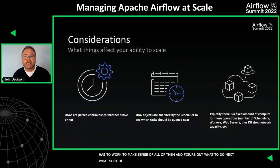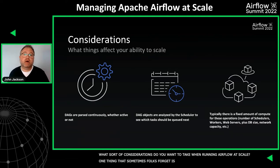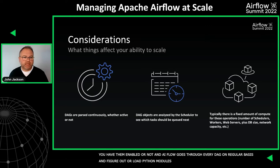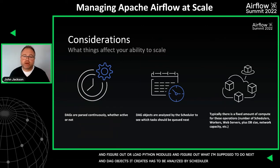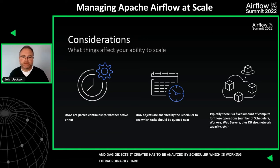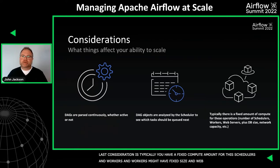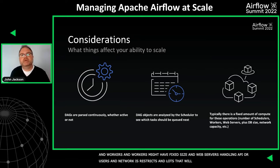What considerations do you want to take when running Airflow at scale? One thing folks sometimes forget is that Airflow is parsing DAGs constantly — whether you have them enabled or not. It goes through every single DAG on a regular basis, loads those Python modules, and figures out what it's supposed to be doing. The DAG objects it creates have to be analyzed by the scheduler. And typically you have a fixed amount of compute: a fixed number of schedulers, workers, web servers, metadata database capacity, and network constraints.